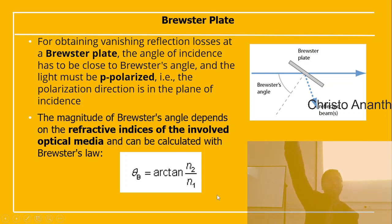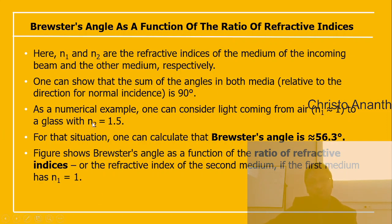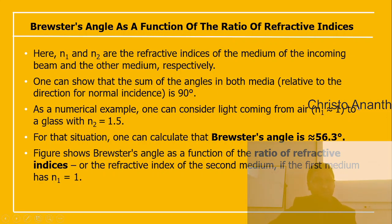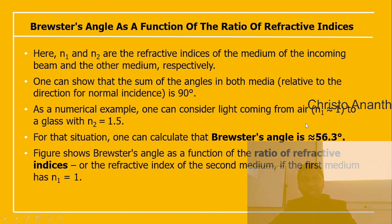Brewster's angle is θ_B = arctan(n₂ / n₁) — note this uses tangent, unlike Snell's law which uses sine. n₁ and n₂ are the refractive indices of the incoming and second medium. The sum of the angles in both media equals 90°. For example, for light traveling from air (n₁ = 1) to glass (n₂ = 1.5), Brewster's angle is arctan(1.5 / 1) ≈ 56.3°.